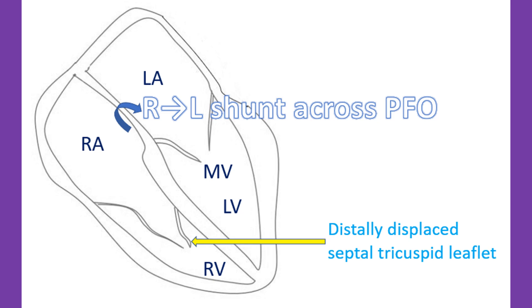There is a risk of stroke because of potential paradoxical embolism due to intermittent right-to-left shunting across a patent foramen ovale.